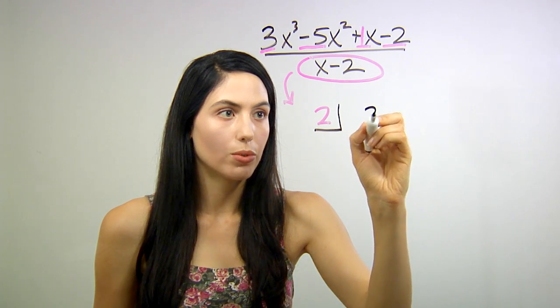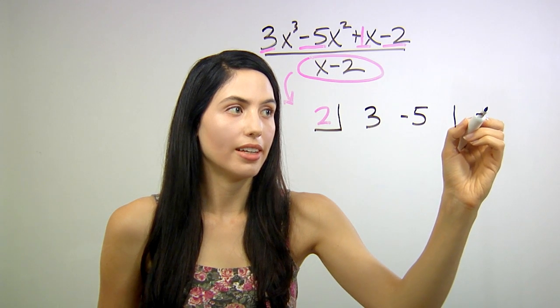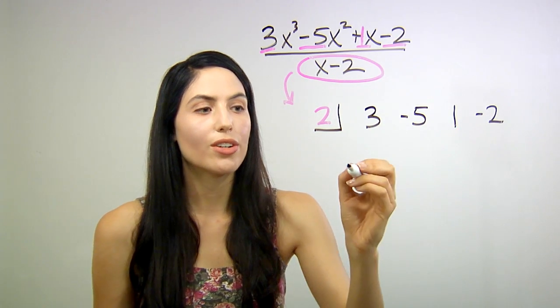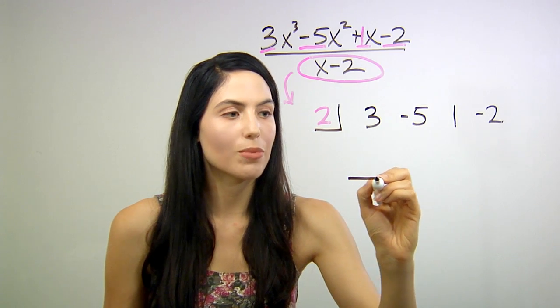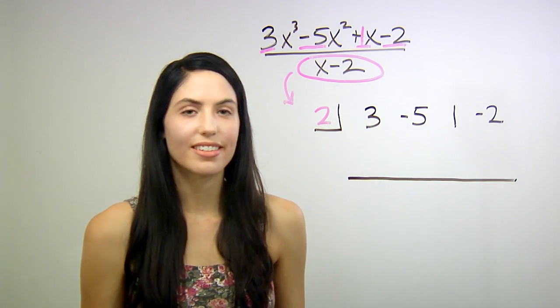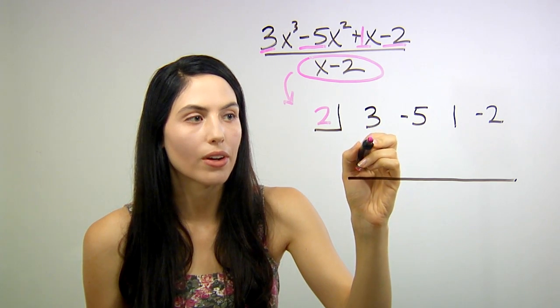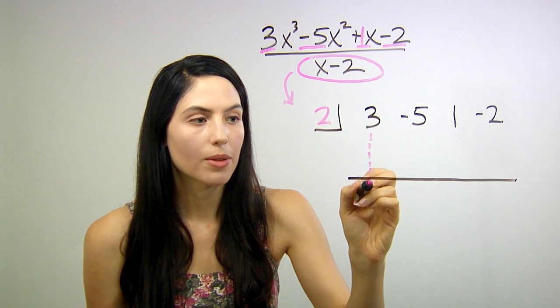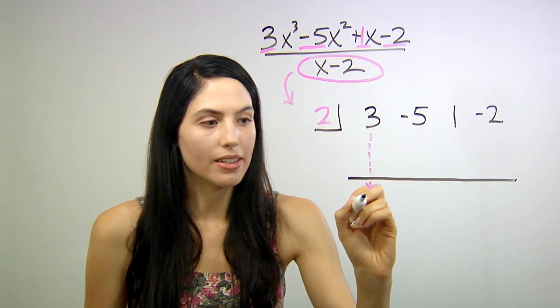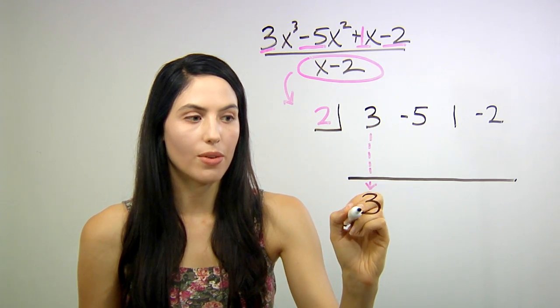So we have 3, negative 5, 1, and negative 2. Next step, draw just a horizontal line here below, leaving one row of space like that. Then we want to drop down this number like that and write it again down here below. So drop down the 3 and write it at the bottom.